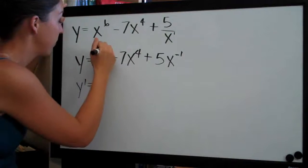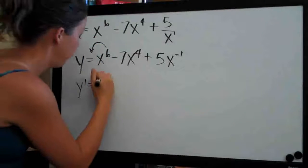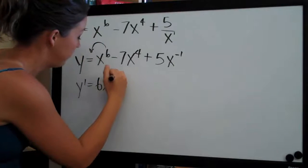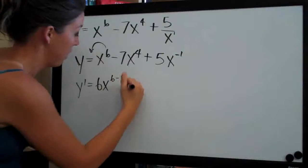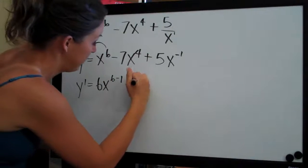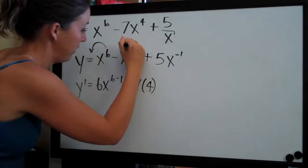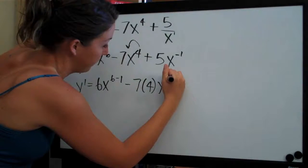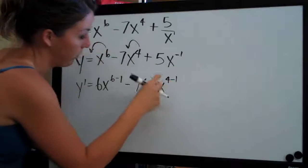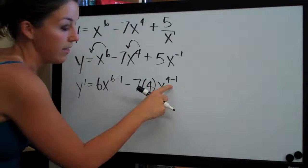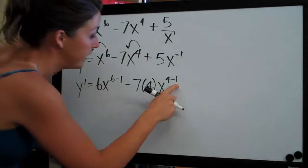So we'll bring 6 out in front here and we'll have 6x to the 6 minus 1, minus 7 times 4, we bring again that exponent out into the front, times x to the 4 minus 1. So again, bringing the exponent out in front and then subtracting 1 from the exponent each time.